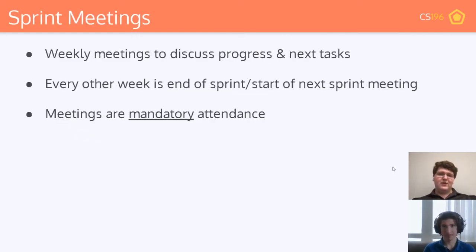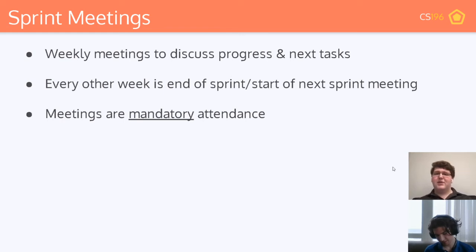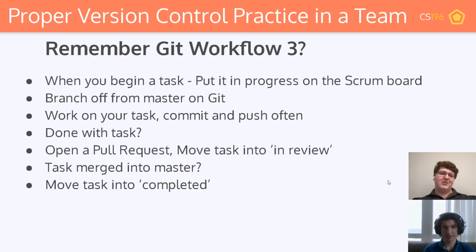Sprint meetings are weekly — every week you'll have a meeting scheduled, usually at the same time, and these are mandatory as part of your grade. Attendance is taken, so it's important that everyone is involved and participating. Every other meeting marks the end of the previous sprint and start of the next, where you talk about what you did last sprint and what you're doing this sprint. The middle meeting is a check-in: how are you doing, is there anything anyone needs help with, can anyone help anyone else.